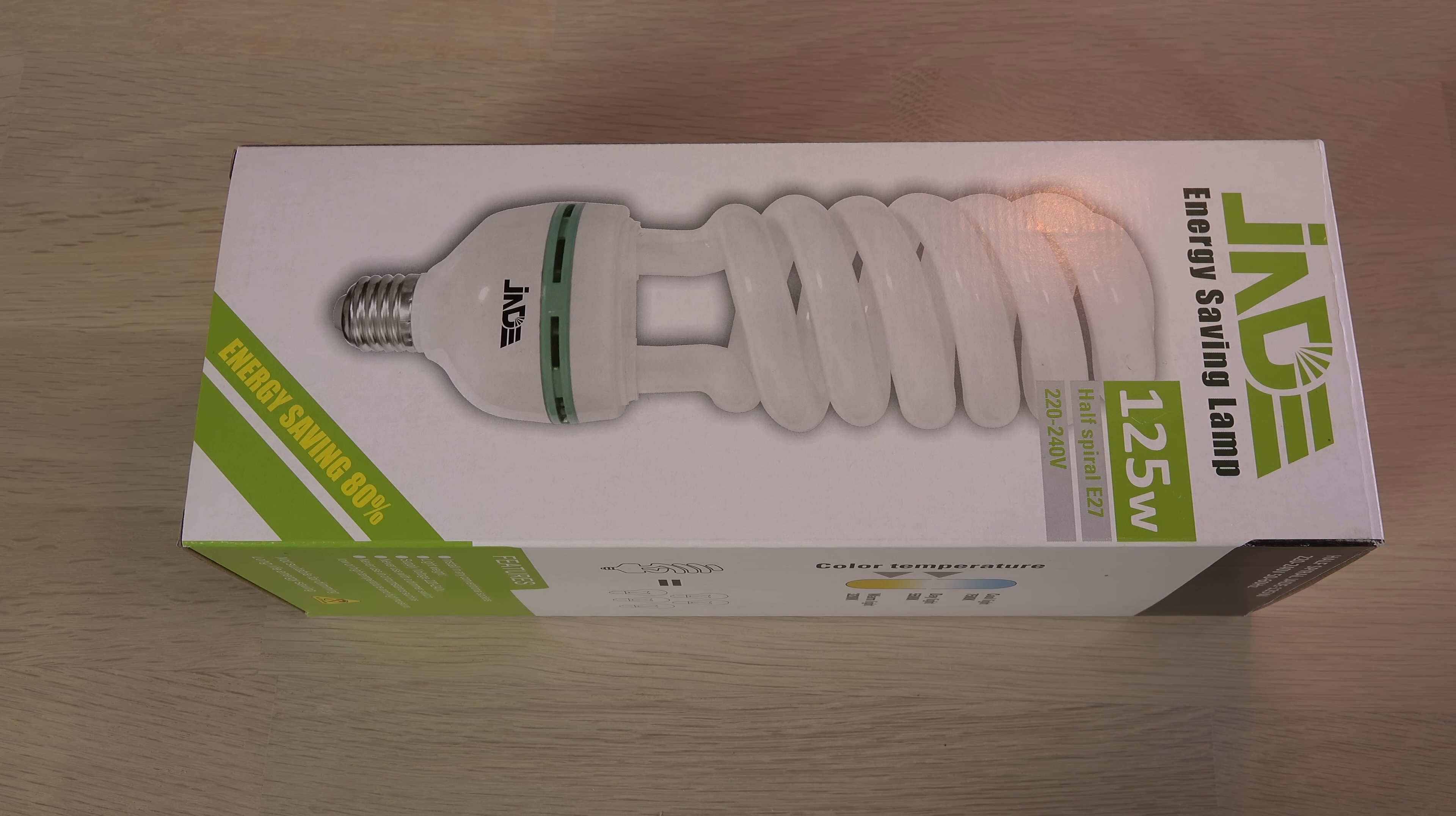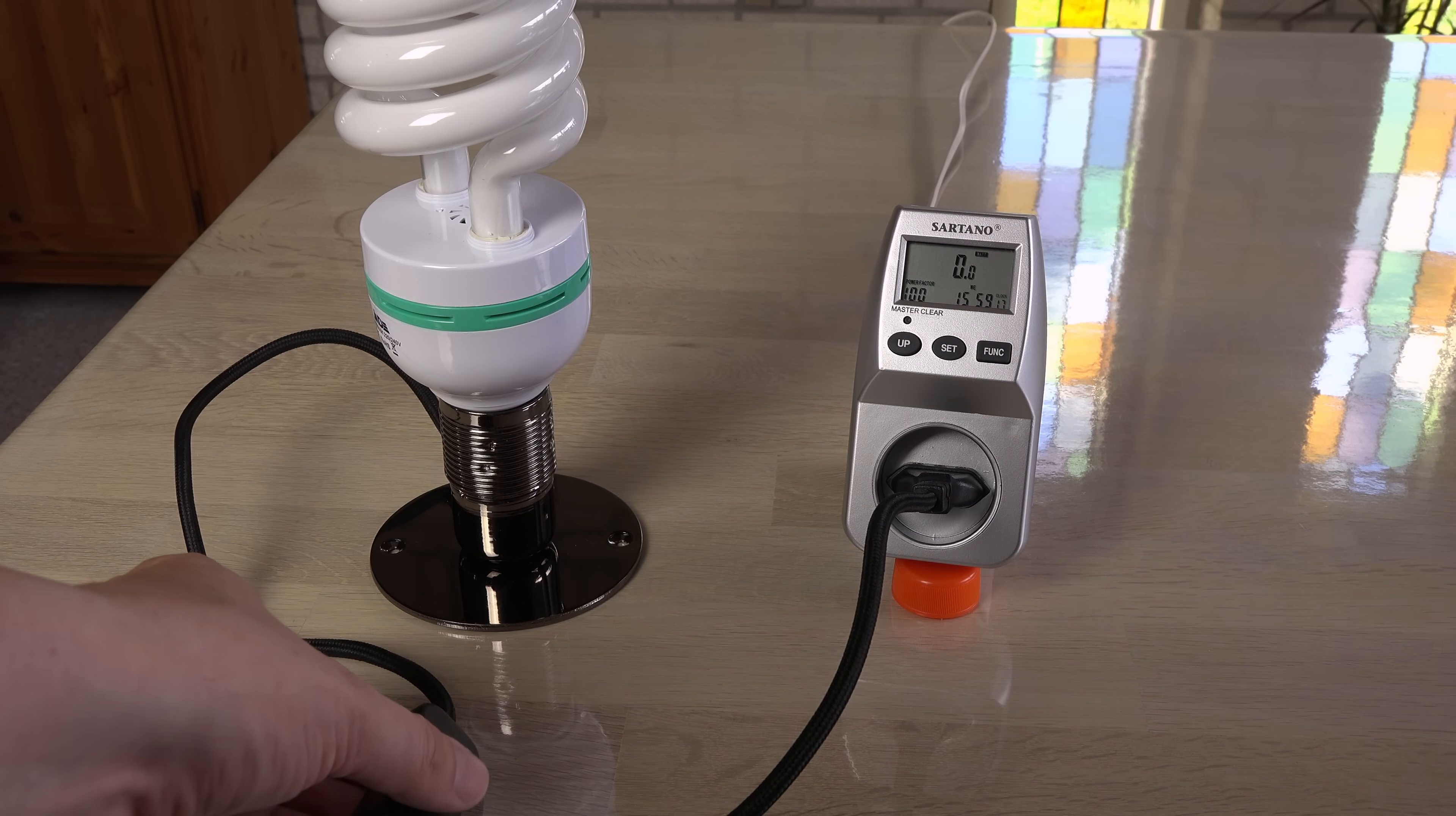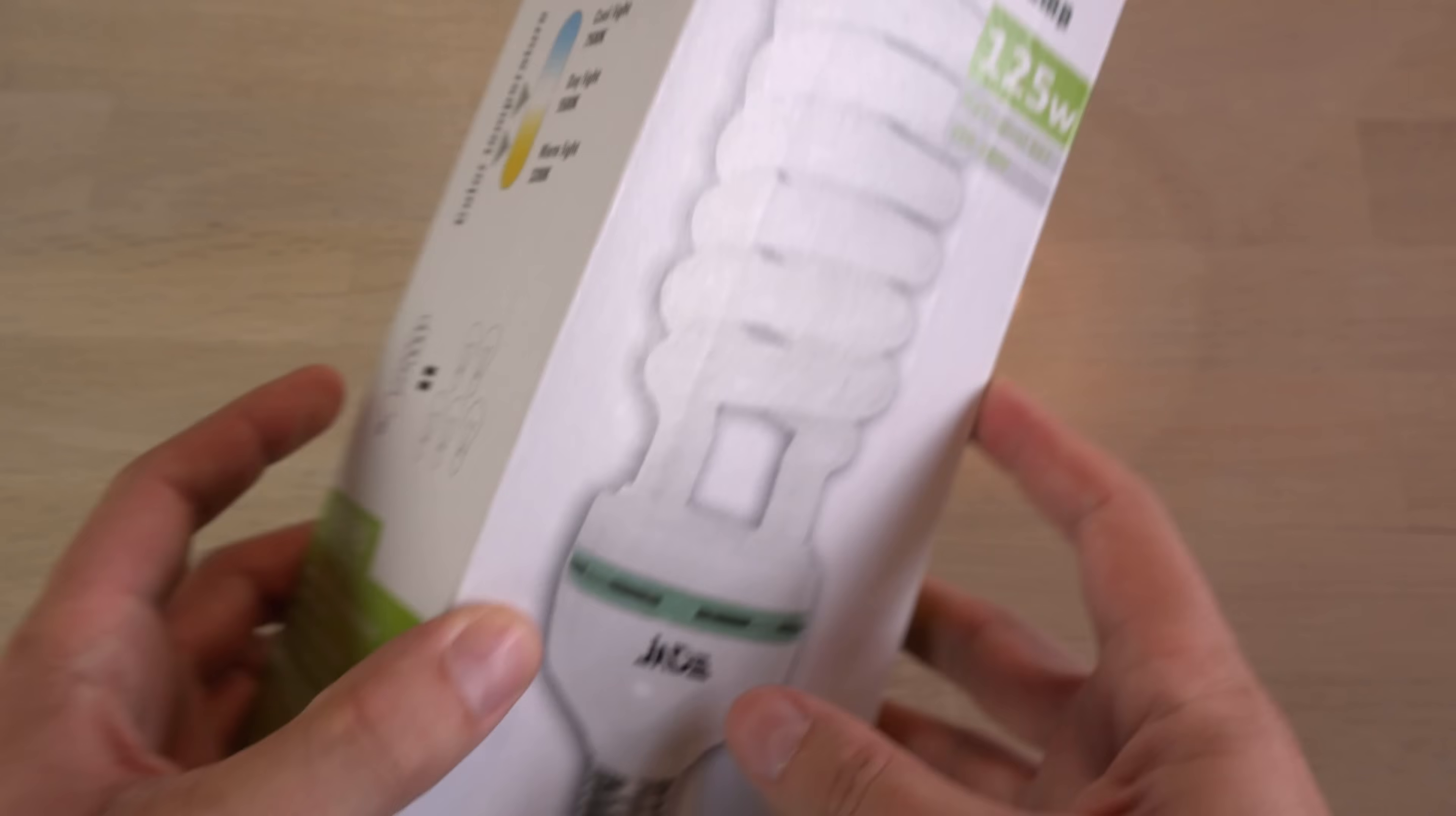The next bulb is a fluorescent one I use in my soft boxes for video lighting. It is a big one advertised at 125 watts and a CRI over 90. However the specs may not be very accurate because it is only using around 50 watts. I guess that's one way of saving energy. Letting the bulb use less wattage than advertised.